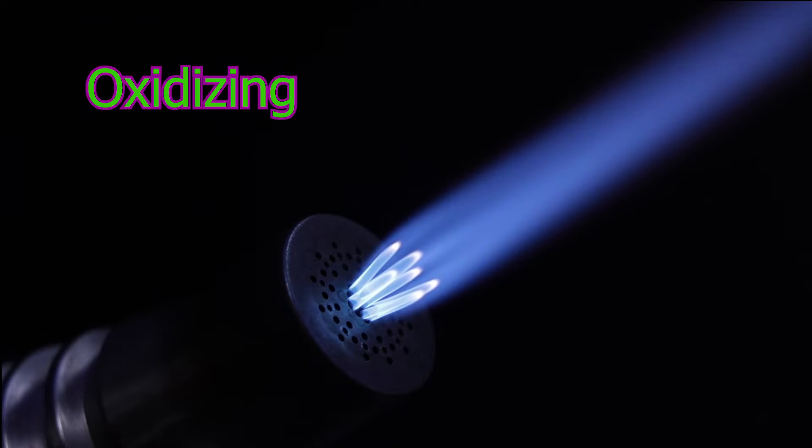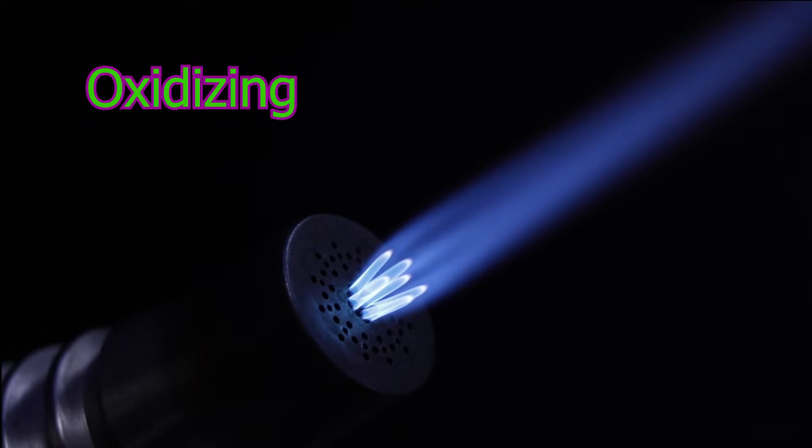And the next is the oxidizing flame. This is achieved by increasing the oxygen higher than the normal amount of oxygen. It'll shrink the flame down, turn the candles completely blue.